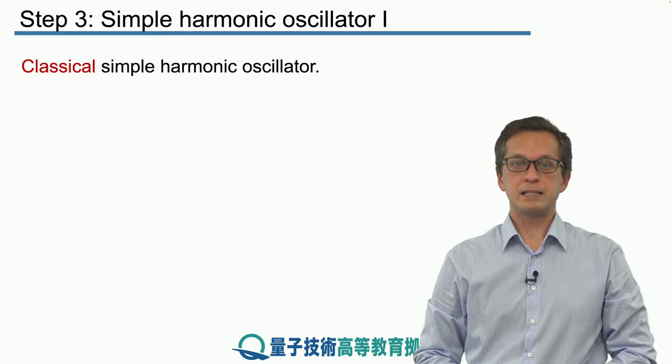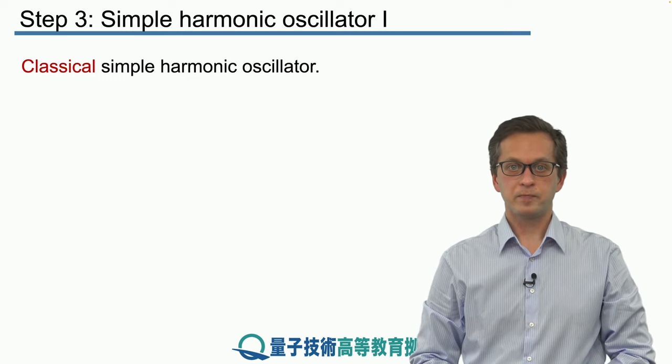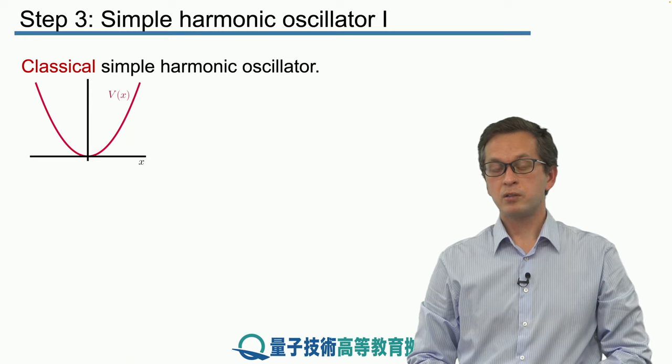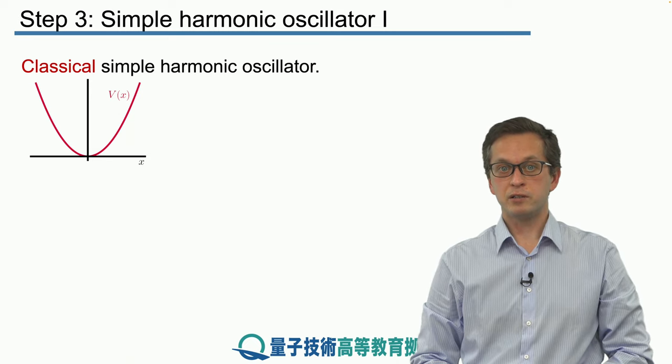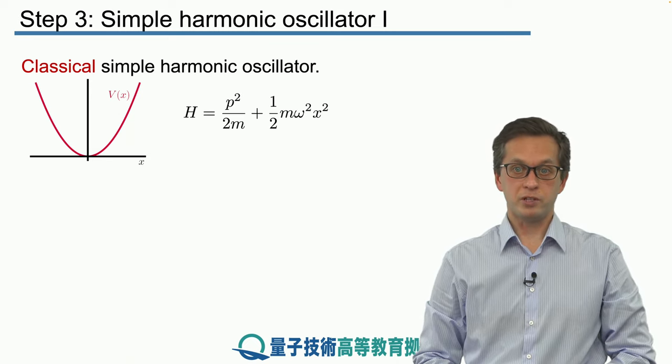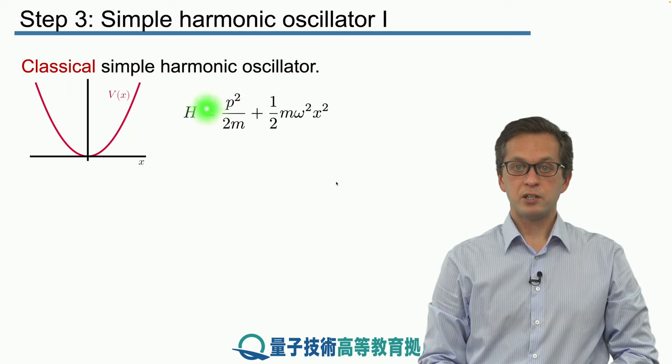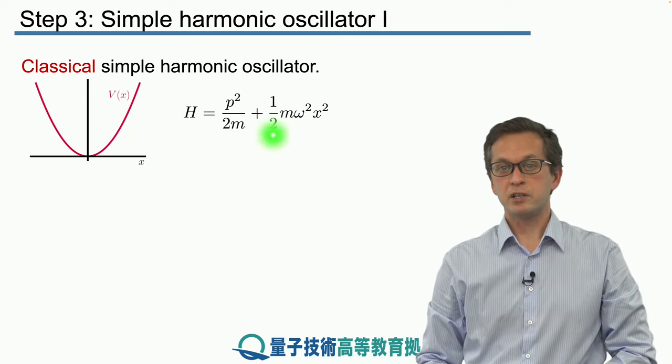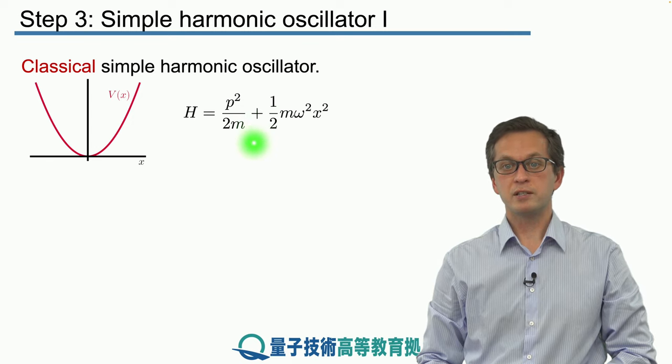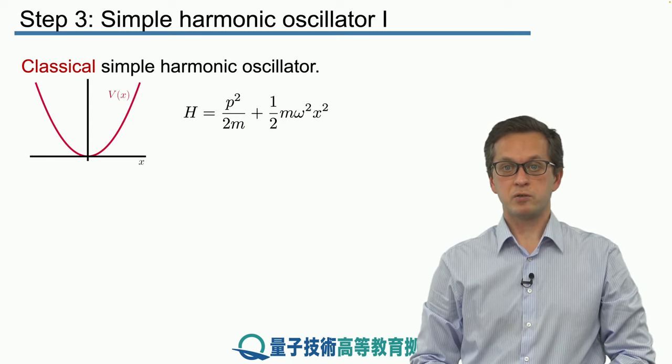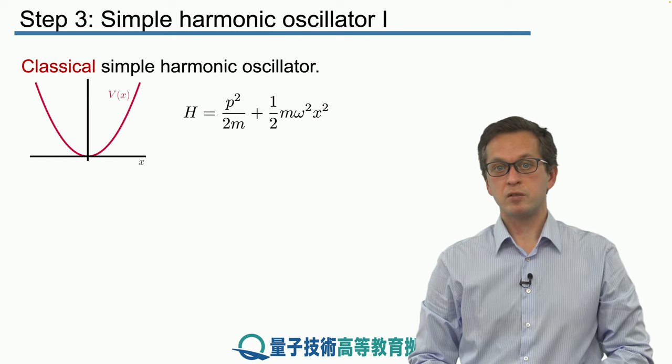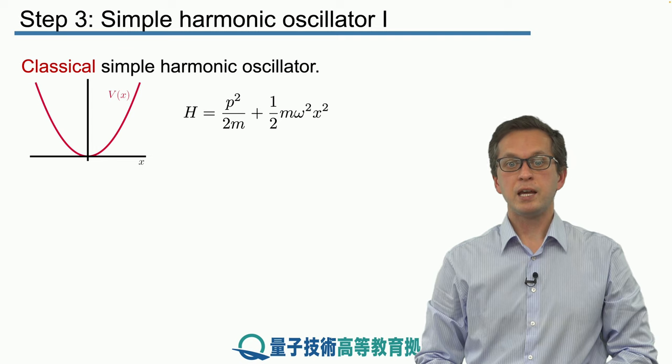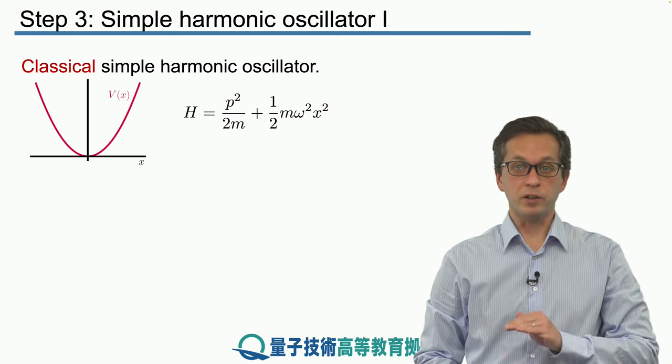So let's begin with the classical simple harmonic oscillator. It's the same problem that we have discussed in the previous step, but now the potential Vx has a particular shape. The kinetic energy is again p squared over 2m, while the potential energy is 1 over 2m omega squared x squared, where m is the mass of the oscillator, omega is its angular frequency, and x is our position coordinate along one dimension.